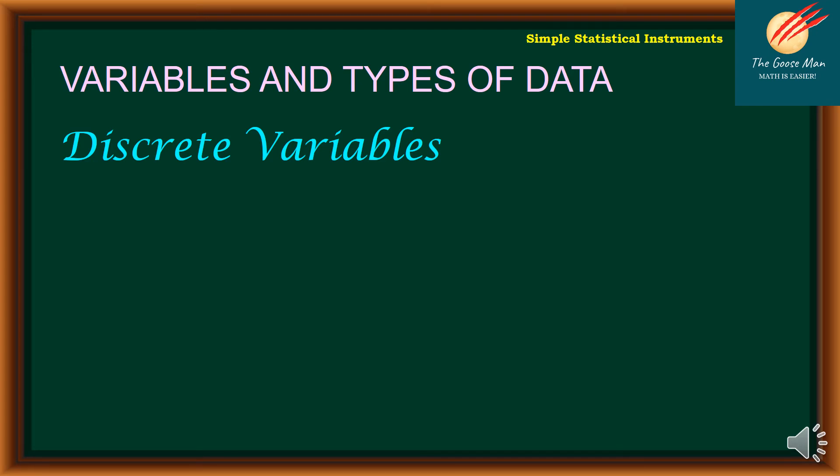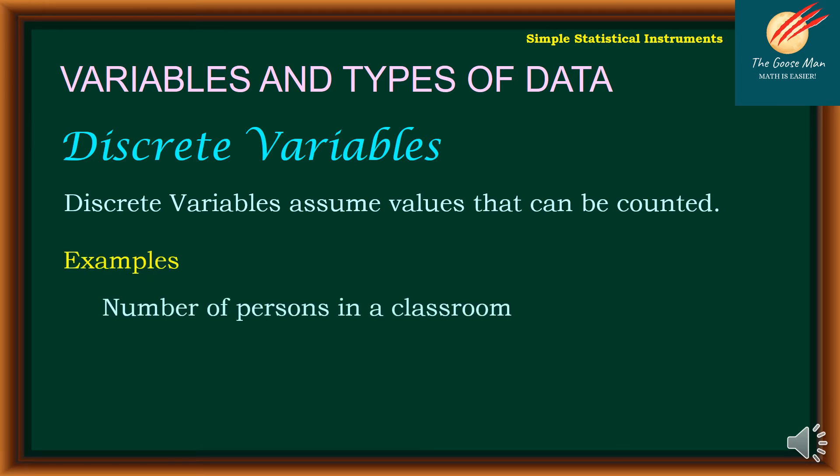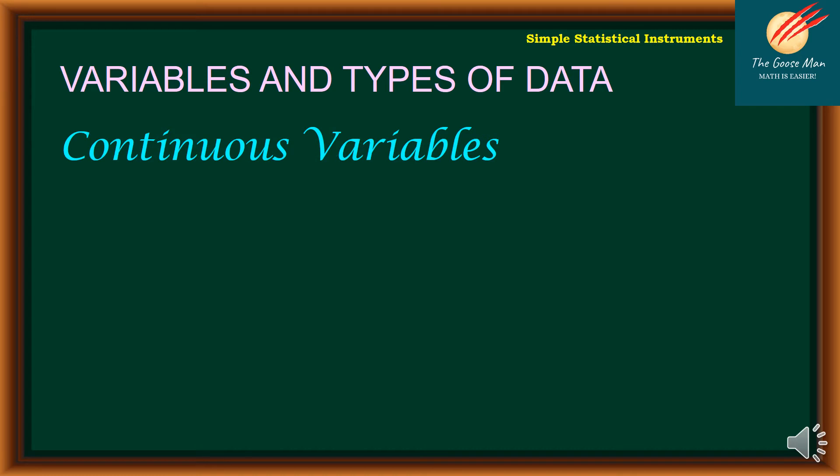As I mentioned a while ago, the quantitative variable can be broken down into two. The first one is the discrete variable or discrete data. Discrete variable assumes values that can be counted. For example, the number of persons in a classroom. We cannot say that we have one and a half person in a classroom. It is always a whole number. Discrete variable or discrete data should always be a whole number. Another example is the number of pages.